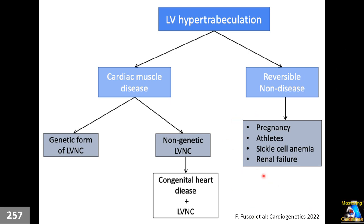Based on this, Dr. Fiusco and his colleagues, reviewing all those studies and cases, proposed dividing left ventricular hyper-trabeculation into two categories: pathologic and non-pathologic. Non-pathologic includes reversible changes like those seen in pregnancy, athletics, sickle cell anemia, and renal failure. Pathologic can be divided into two groups: genetic, as discussed, and non-genetic, which falls into the category of congenital heart disease. Among the two major cardiology societies — European and American — there is some disagreement about how to classify this disorder.